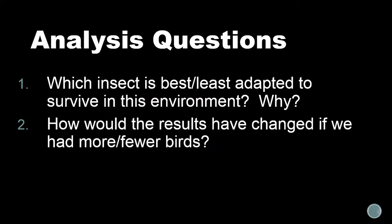If we were in class, I would have you write a paragraph about these, but we're not. These are the things I want you to think about, and I'm probably going to ask you something about it on the Google Classroom quiz. Be thinking about which insect is best adapted or least adapted to survive in this environment and why. Also think about how the results would have changed if we had had more birds or fewer birds.